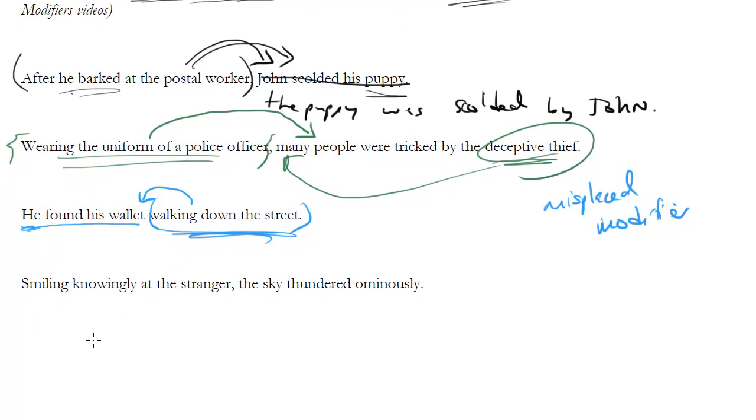This is the last example of another kind of dangling modifier that doesn't come up too much. And this is one where there's actually nothing for the participial phrase or the modifier to modify. So, smiling knowingly at the stranger, the sky thundered ominously. So wait a minute. Who was smiling knowingly? Was it the sky? No. But who? So notice there's no noun at all in the sentence that this could be modifying.